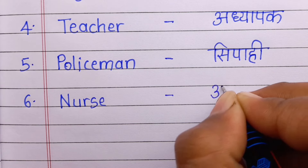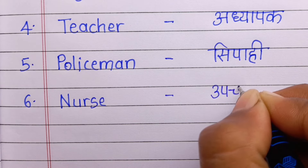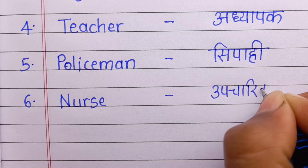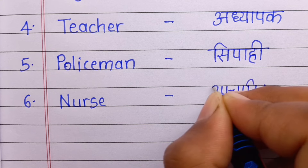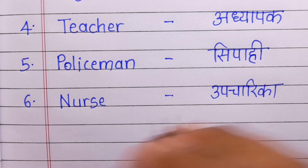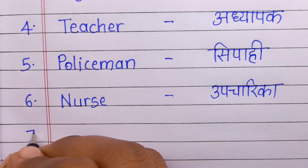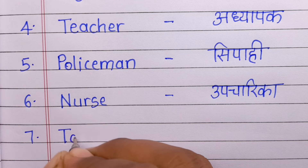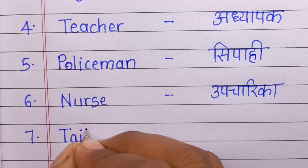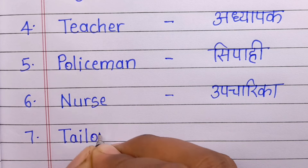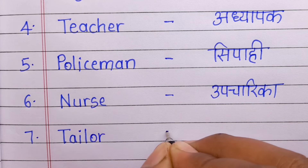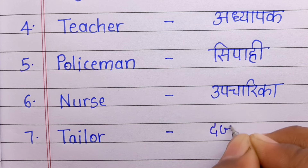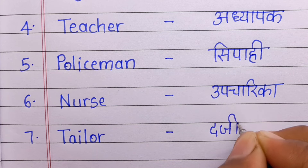Number 5: Policeman. Policeman means sipaahi. Number 6: Nurse. Nurse means upcharika. Number 7: Tailor. Tailor means darji.